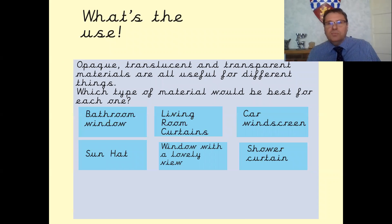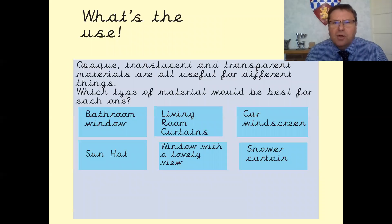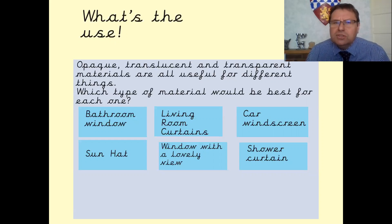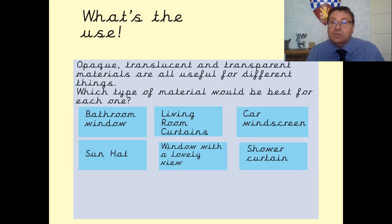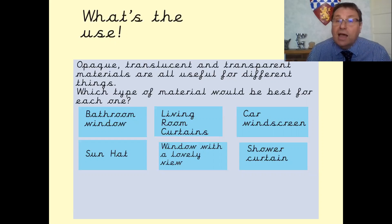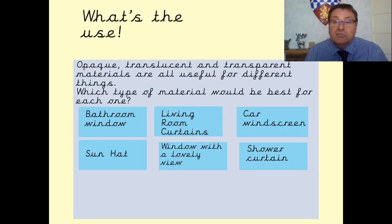So stop the video, look at these items below and work out which word you would use to describe them. Are they opaque, translucent or transparent? Stop the video now, talk to an adult and explain why you think they would be made out of that material, and then when you come back we'll go through the answers.